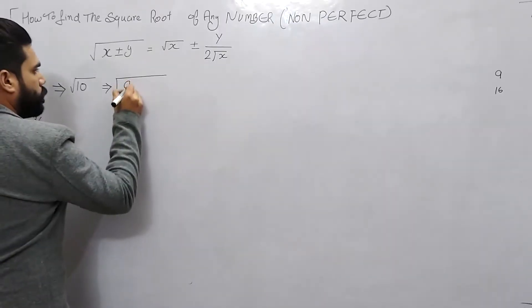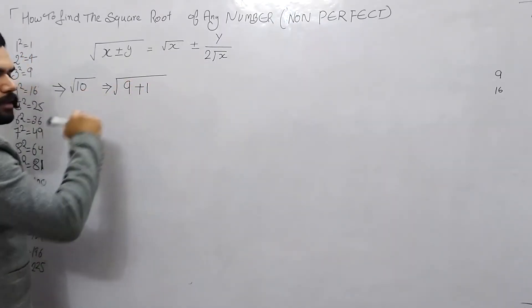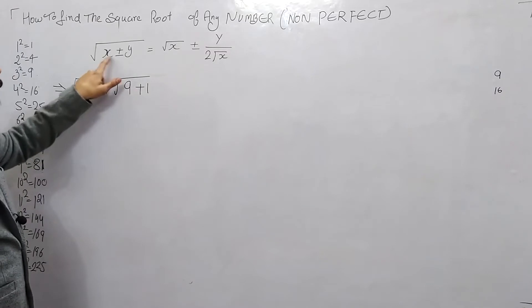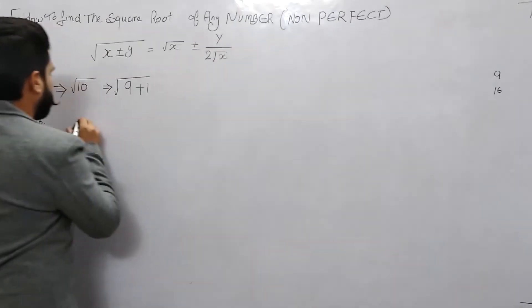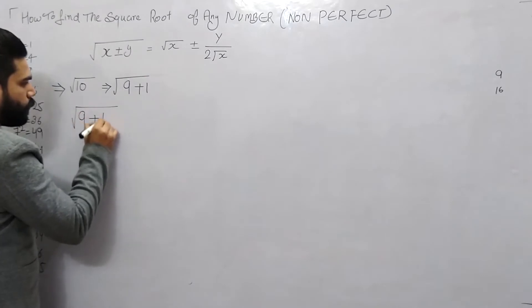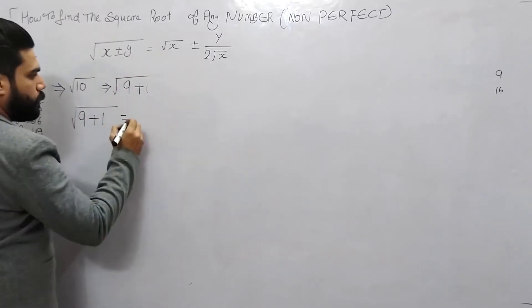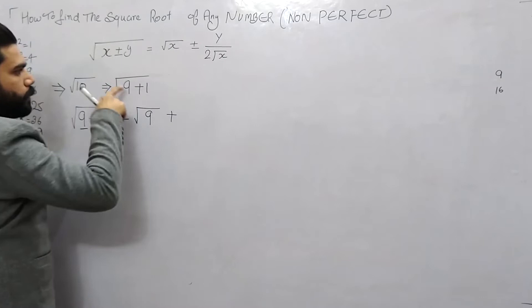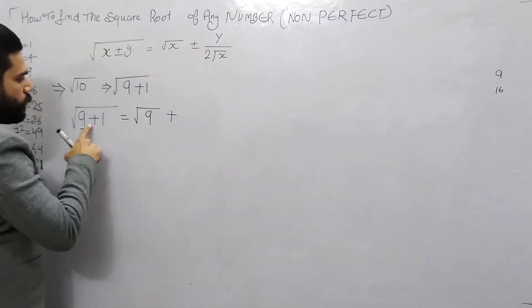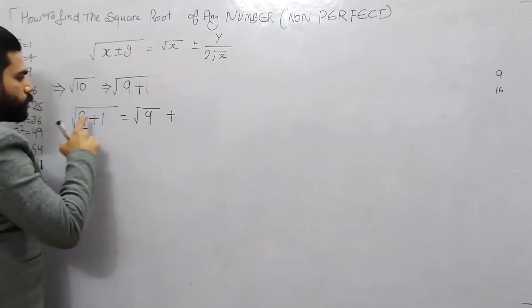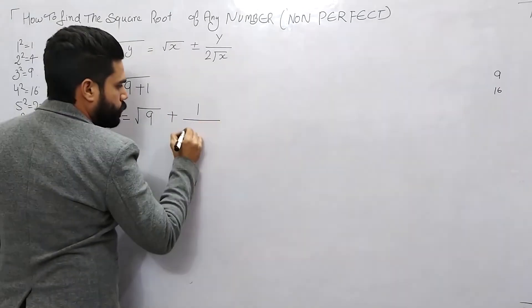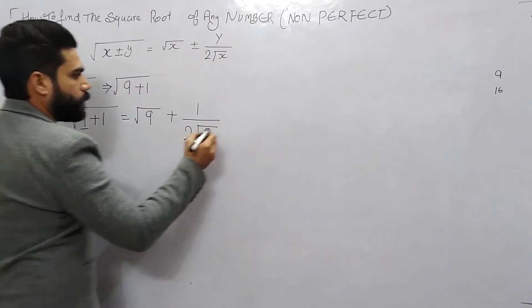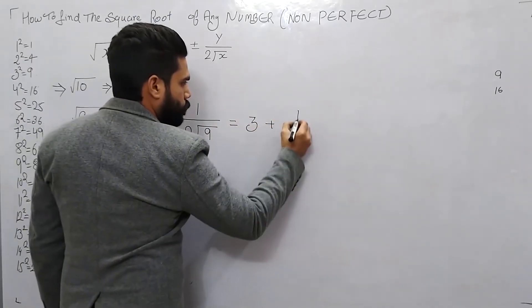We write 10 as 9 plus 1. So x is 9 and y is 1. We apply the formula: root of x, which is root 9, plus y over 2 root x. Since we have a plus, we use plus. y is 1, and 2 times root of 9 — the square root of 9 is 3.